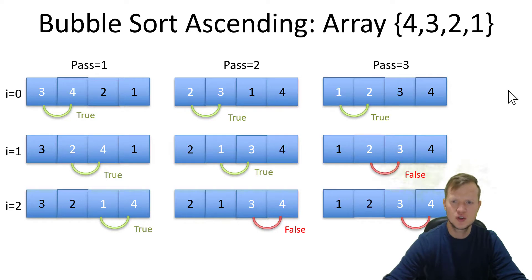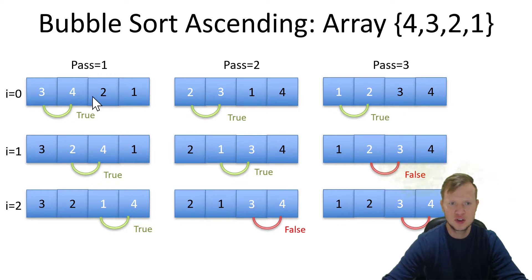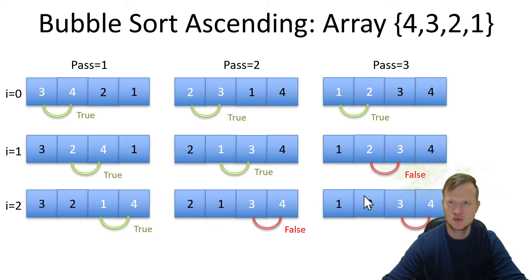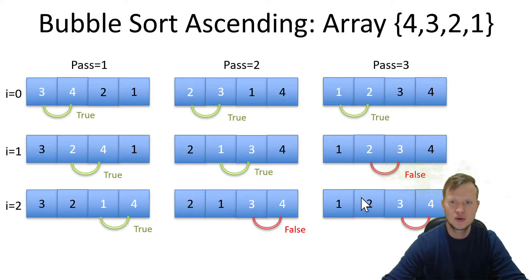As the array gets bigger - for example an array of size 5 - this will have one extra layer of comparisons and one extra pass, and that extra pass would have three false comparisons. As we can see, 3 is not bigger than 4, 2 is not bigger than 3, 3 is not bigger than 4. With this worst case scenario we do not have to do these comparisons - we can eliminate them to effectively increase the speed of the bubble sort algorithm.